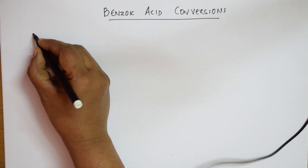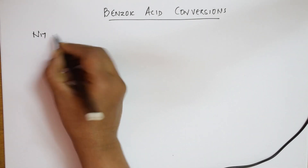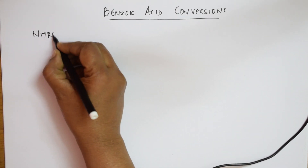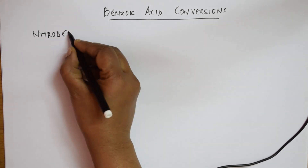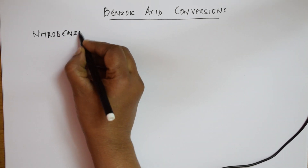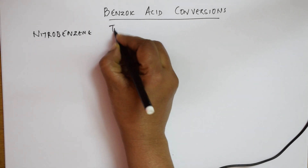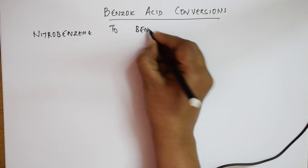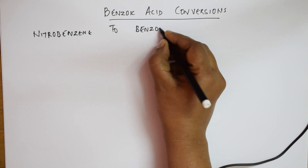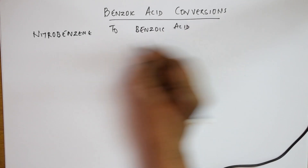In the exam paper, if they give you to convert nitrobenzene to benzoic acid — this is what is given to you in the paper: nitrobenzene to benzoic acid. For this I will give you a small trick on how to remember.